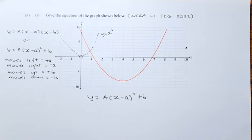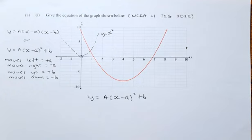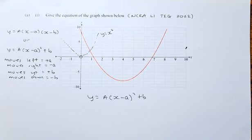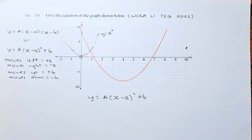Before we begin, we need to know what is capital A, what is little a, and what is little b. Capital A is the scale factor. It defines the steepness of the graph. Little a is the movement of the point, whether it moves left or right. And b is whether it moves up or down. If it moves left, it's a positive a. If it moves right, it's a negative a. If it moves up, it's a positive b. If it moves down, it's a negative b.